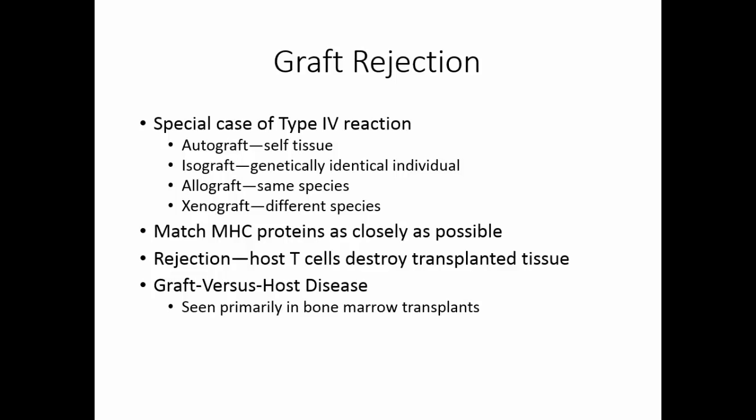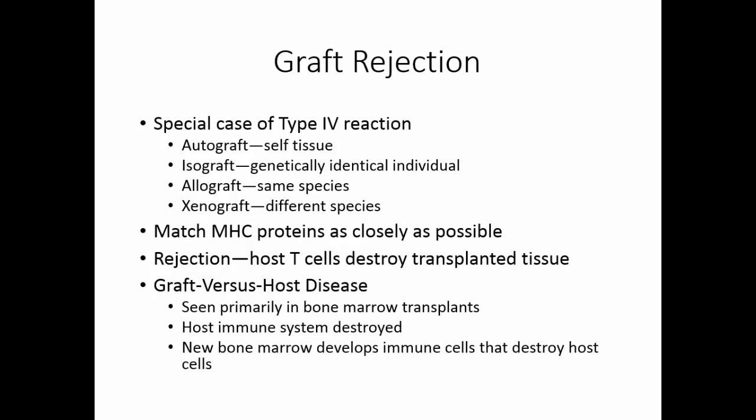If someone is getting a bone marrow transplant, they have their immune system completely destroyed. Then when they get the bone marrow, the bone marrow starts to develop new immune cells. If these new immune cells decide that the host is the problem, they will actually attack host cells and kill the host. There's no real treatment for this — it's typically fatal.